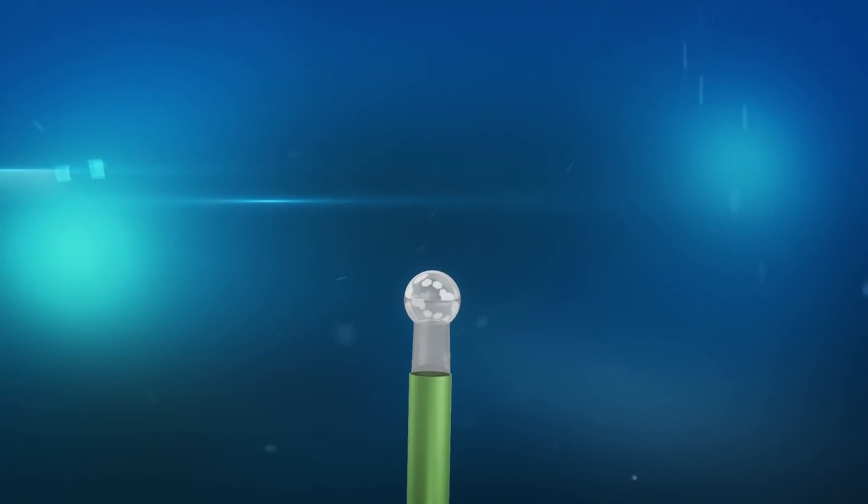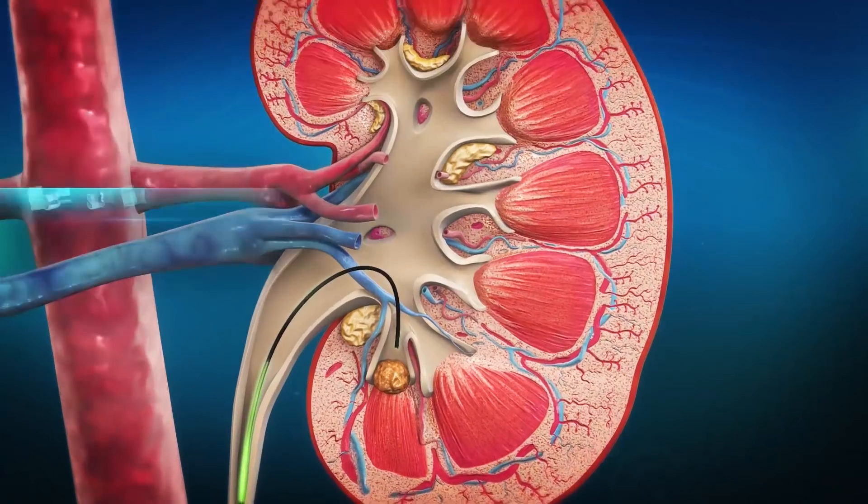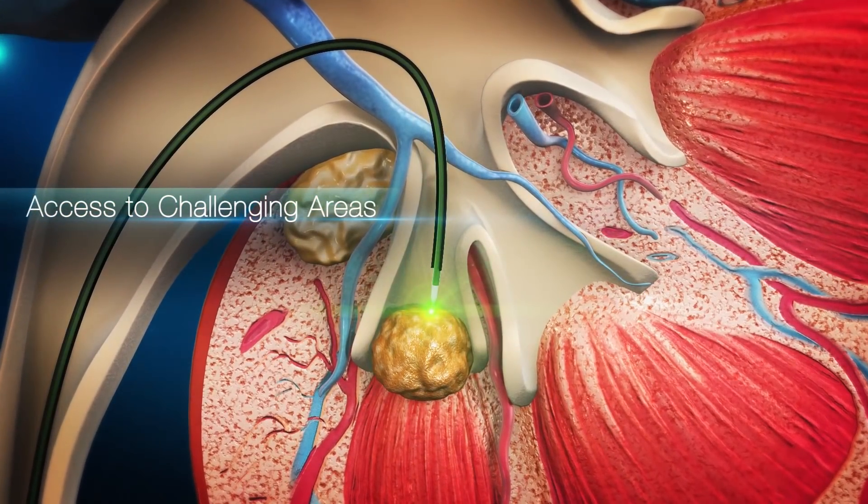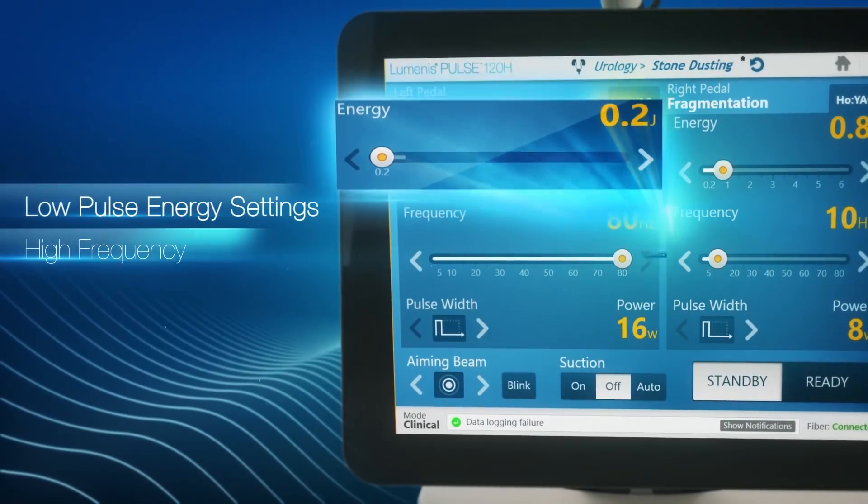The unique rounded tip of the fiber reduces the chances of inadvertent damage to the scope and therefore saves cost. It can effectively pass through a fully deflected ureteroscope in one single step, reducing procedure time.